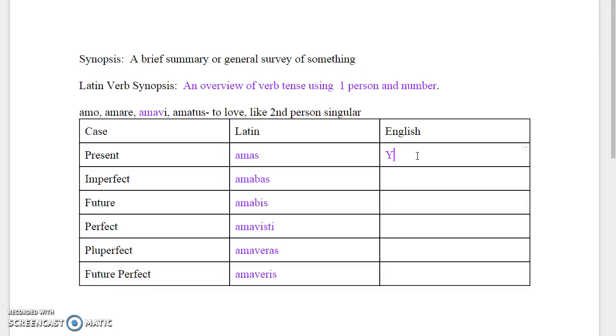So let's start with the present tense with you love, and then the imperfect tense which is you were loving, and then the future tense which is you will love, and the perfect tense which is simply you loved, and the pluperfect tense which is you had loved, and finally the future perfect tense which is you will have loved.